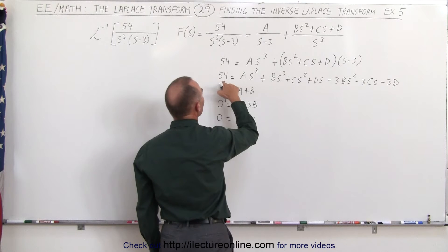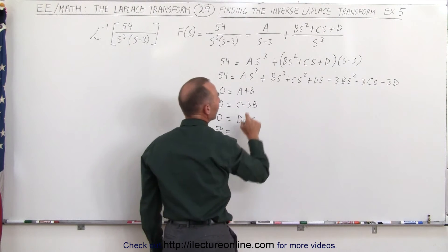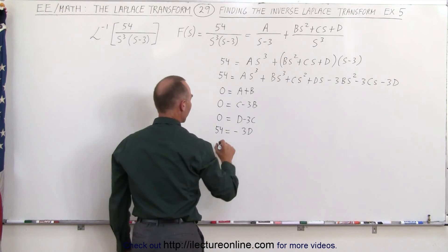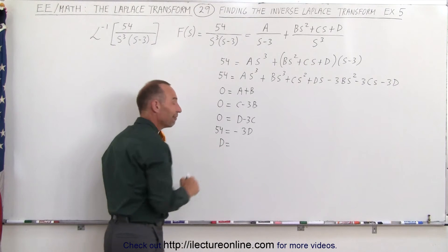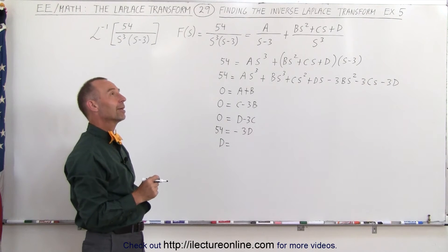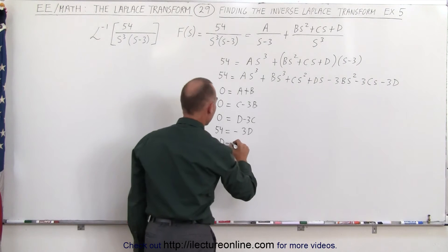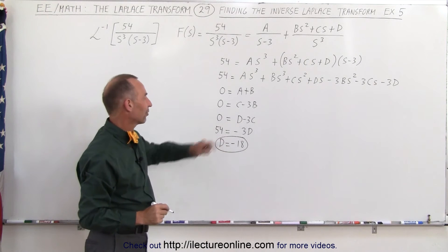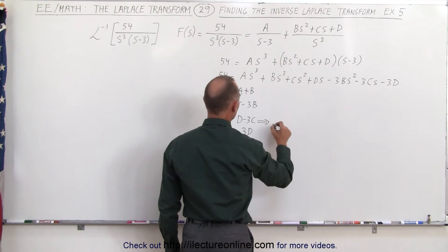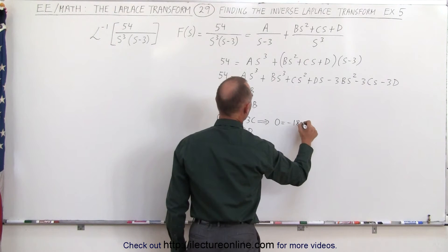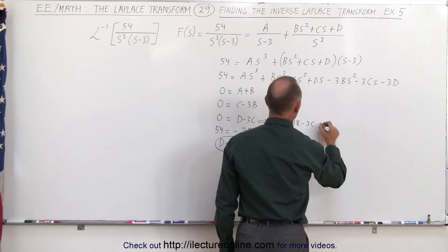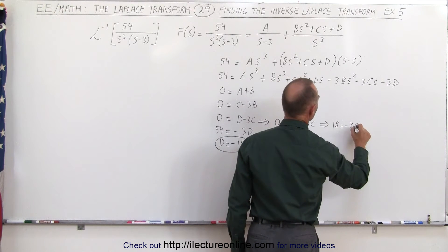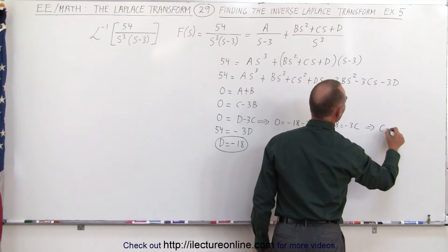And finally we do have a constant term: 54 is equal to minus 3d, which means that d is equal to the negative of 54 divided by 3 — that's minus 18. So we have the value for d. Now we can find the value for c: 0 is equal to d minus 3c, giving us c is equal to minus 6.